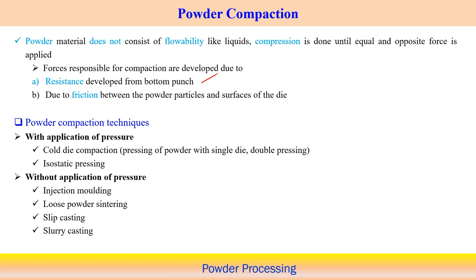Powder compaction techniques fall into two basic categories: with application of pressure and without application of pressure. With application of pressure, we follow cold die compaction — pressing powder with a single die or double pressing using dies from top and bottom — and isostatic pressing, where we try to apply uniform pressure throughout all dimensions.